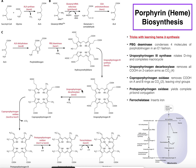Now we have the enzyme uroporphyrinogen decarboxylase. What this enzyme does is find all of the carboxyl groups on the two-carbon arms of uroporphyrinogen III — there are four of them — and remove all those carboxyl groups as carbon dioxide, leaving nothing but methyl groups. All of those carboxyl groups on the two-carbon arms are gone, and we just have simple methyl groups remaining. That gives us coproporphyrinogen III.